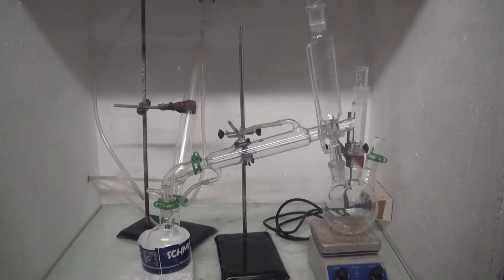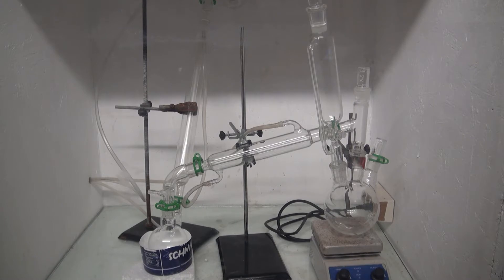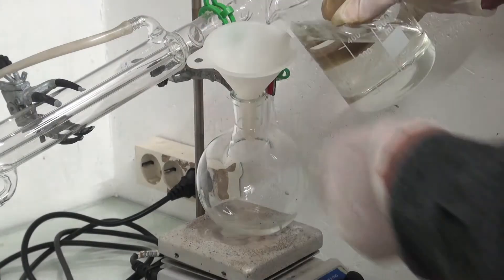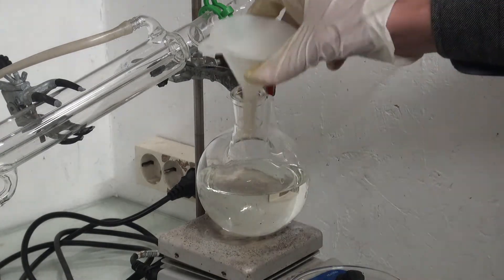Next I set up a simple distillation apparatus with a reflux condenser at the end to catch as much bromine as possible. I added in the hydrobromic acid and then manganese dioxide as my oxidizer.